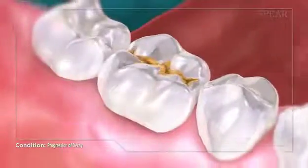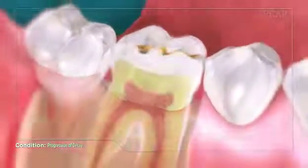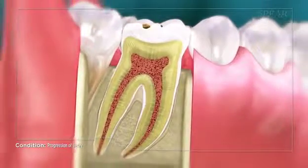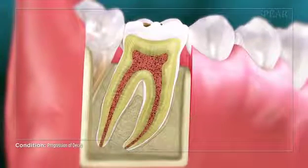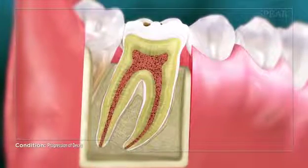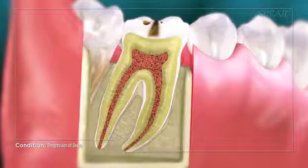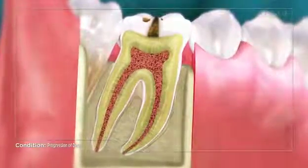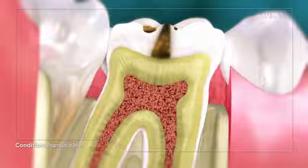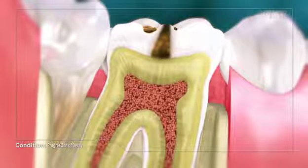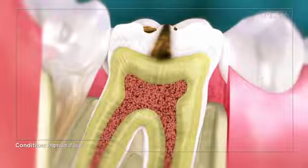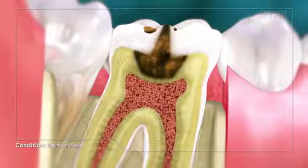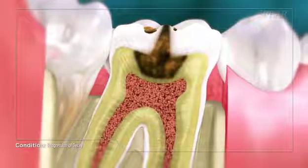The process of tooth decay starts with plaque and bacteria building up on the tooth structure, creating acid. This acid begins to erode the hard protective coating on the tooth, also known as the enamel. Once the acid breaks through the outside layer of the enamel, the decay spreads faster due to the inside layer, known as the dentin, not being as hard as the enamel.